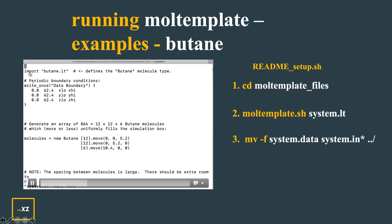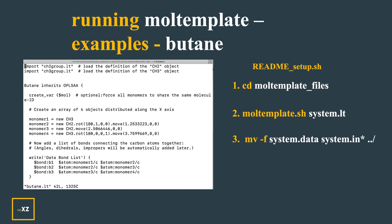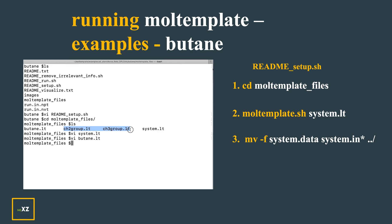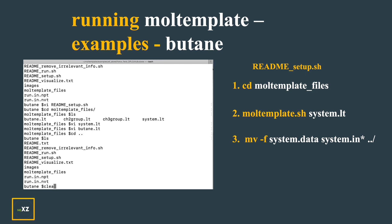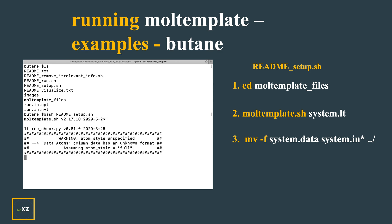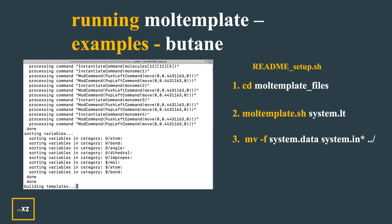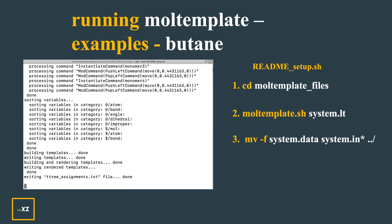If you see the system dot LTE file, 'import butane dot LTE' is written there. If you open the butane dot LTE, you can see that the CH2 group and the CH3 group dot LTE files are there. Now I run bash readme underscore setup dot SH. When you run this, a series of Python scripts and template building steps are executed.